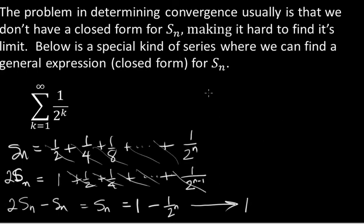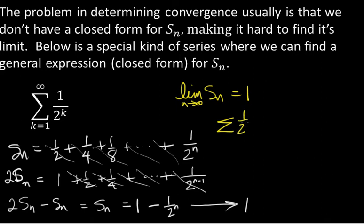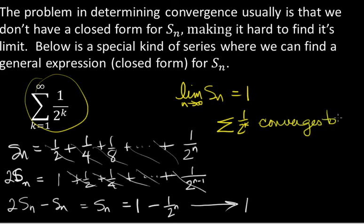We can say this several ways: the limit of S_n as n goes to infinity equals 1, or the series sigma 1/2^k from k equals 1 to infinity converges to 1, or the sum of the series is 1. So sigma 1 over 2^k from k equals 1 to infinity equals 1.